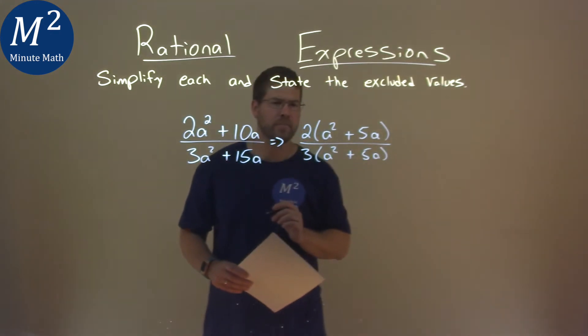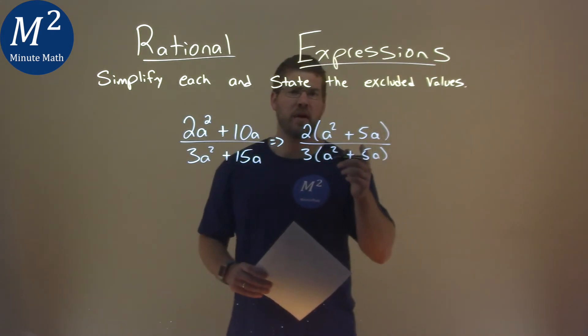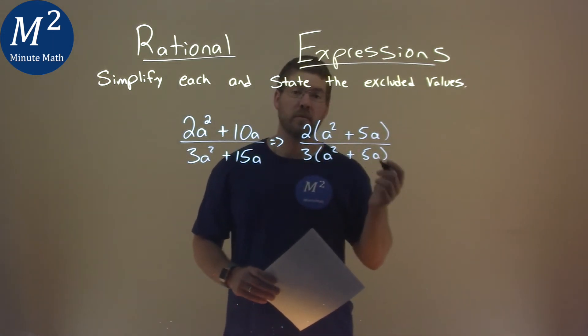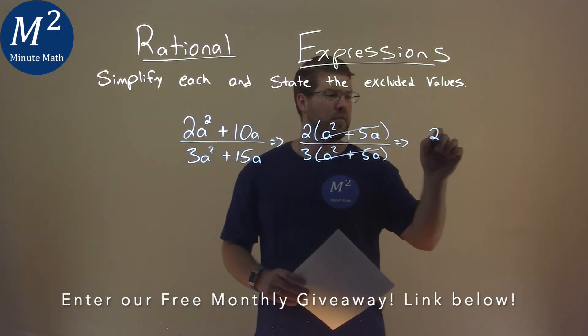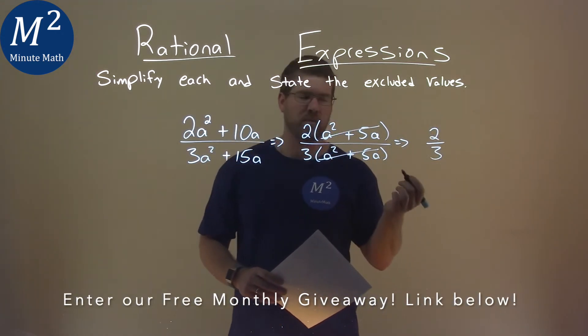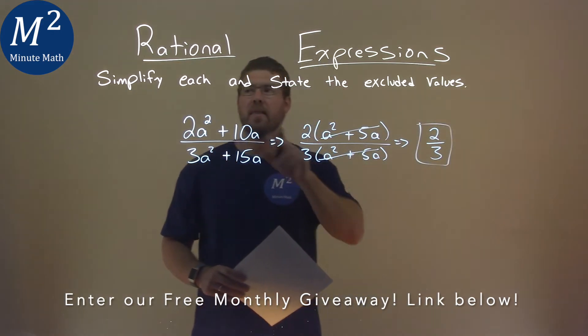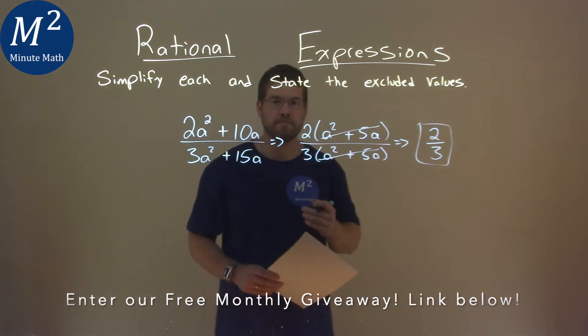Notice the repetition. Well, a squared plus 5a divided by a squared plus 5a is equal to 1. They cancel each other out. So we're really just left with 2 thirds. We can't simplify that anymore, and that's our simplified expression, 2 thirds.